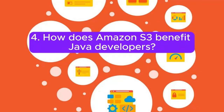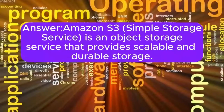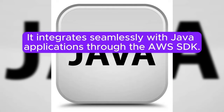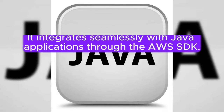Question 4: How does Amazon S3 benefit Java developers? Amazon S3 Simple Storage Service is an object storage service that provides scalable and durable storage. Java developers use S3 to store and retrieve data, such as static assets, backups, or large datasets. It integrates seamlessly with Java applications through the AWS SDK.